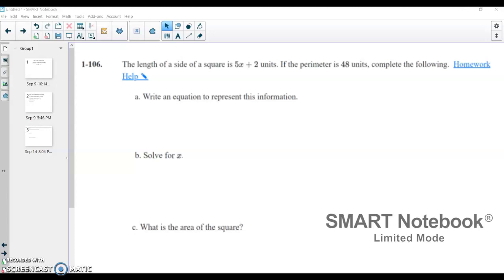All right, here is homework help for problem 1-106 on homework 1.2.6. The problem is telling us that we have a square with a side length 5 times x plus 2, and it's telling us that the perimeter is 48 units.